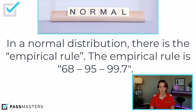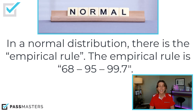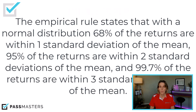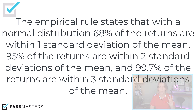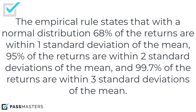In a normal distribution, there is the empirical rule. The test loves the empirical rule. The empirical rule is 68, 95, 99.7. The empirical rule states that with a normal distribution, 68% of the returns are within one standard deviation of the mean, 95% of the returns are within two standard deviations of the mean, and 99.7% of the returns are within three standard deviations of the mean.